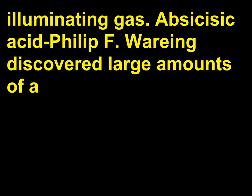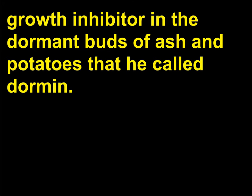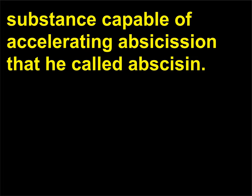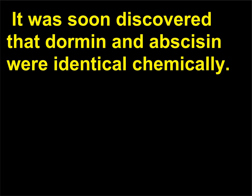Abscisic acid: Philip F. Wareing discovered large amounts of a growth inhibitor in the dormant buds of ash and potatoes that he called dormin. Several years later in the 1960s, Frederick T. Addicott reported the discovery in leaves and fruits of a substance capable of accelerating abscission, which he called abscisin. It was soon discovered that dormin and abscisin were identical chemically.